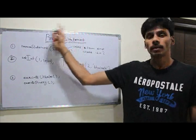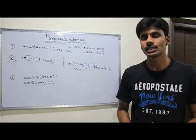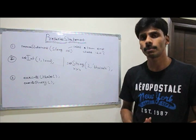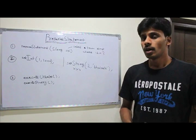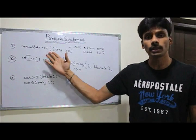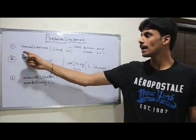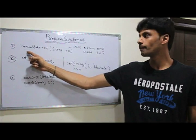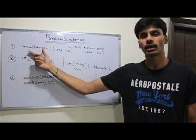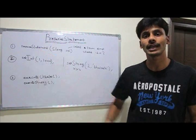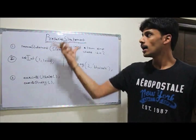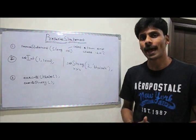To do that, we use the prepared statement interface which is a child interface of the statement interface. We can use the prepared statement in three simple steps. The first step is to create a prepared statement by calling the prepared statement method on the connection interface. You get a prepared statement object back.